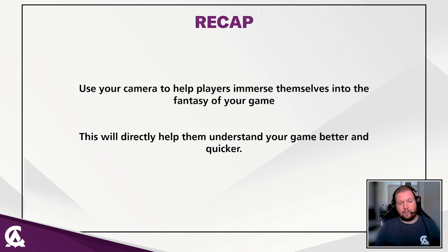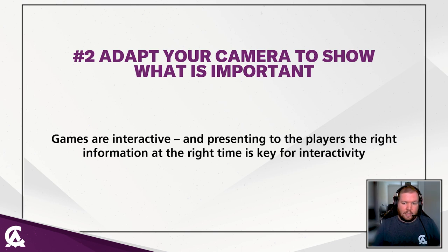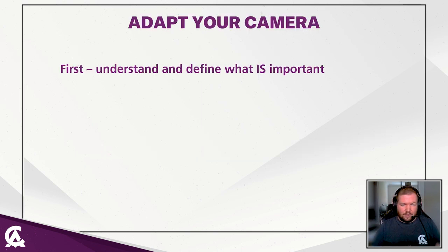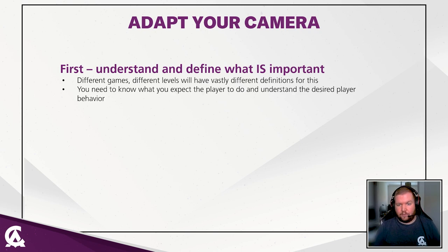Tip number two: adapt your camera to show what is important. Games are interactive, and presenting players with the right information at the right time is key. First, understand and define what is important — different games and different levels within your games will have different definitions for this. You need to know what you expect the player to do and understand the desired player behavior.